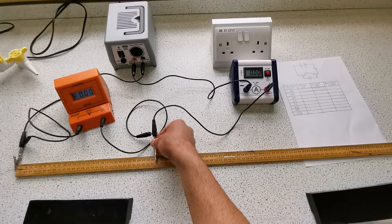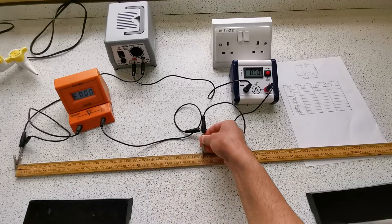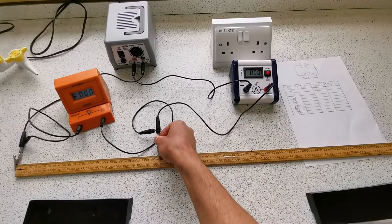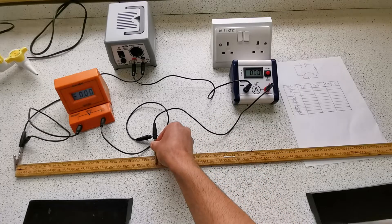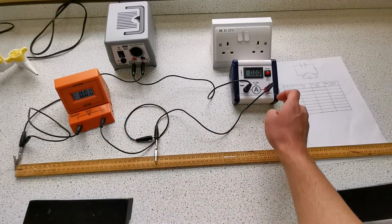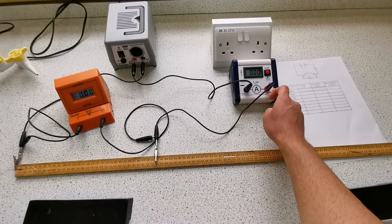And then I have the second crocodile clip which I can disconnect and move along the wire to change the length of the wire. I have the voltmeter that goes over the wire to measure the voltage, and I have the ammeter here which will give me the current.